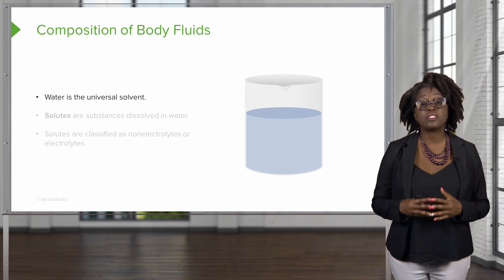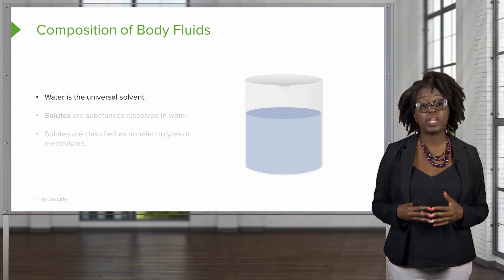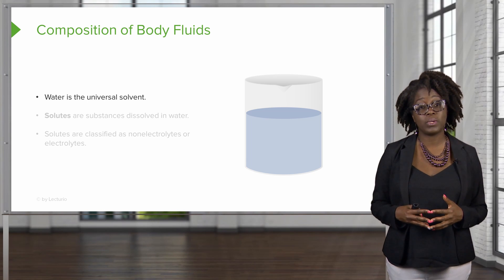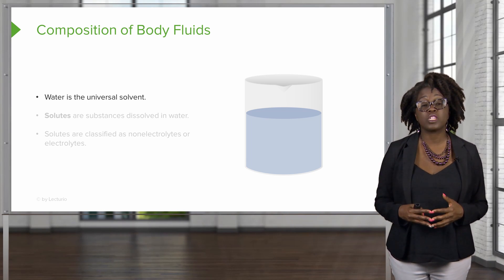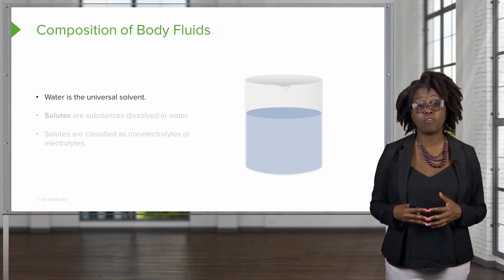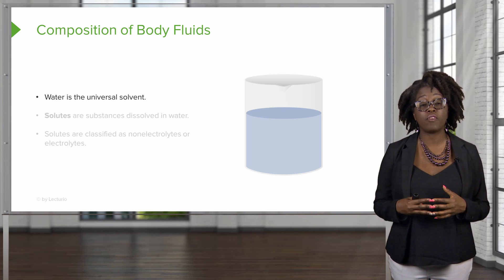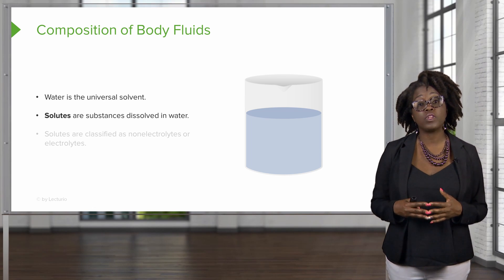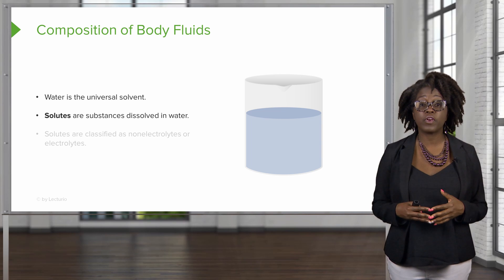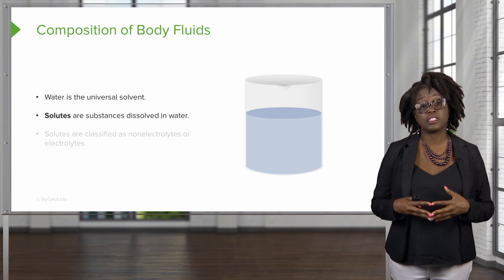So what is our body's fluids mostly made of? The main component of our body fluids is water, because water is a universal solvent and many different other constituents can dissolve in water. Substances that are dissolved in water are referred to as solutes, and water is the solvent.